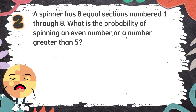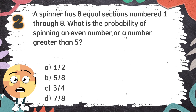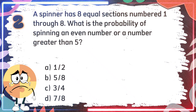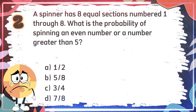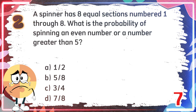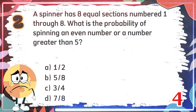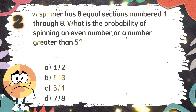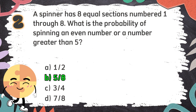Number 2: A spinner has 8 equal sections numbered 1 through 8. What is the probability of spinning an even number or a number greater than 5? The choices are A. 1 out of 2, B. 5 out of 8, C. 3 out of 4, D. 7 out of 8. The correct answer is B. 5 out of 8.